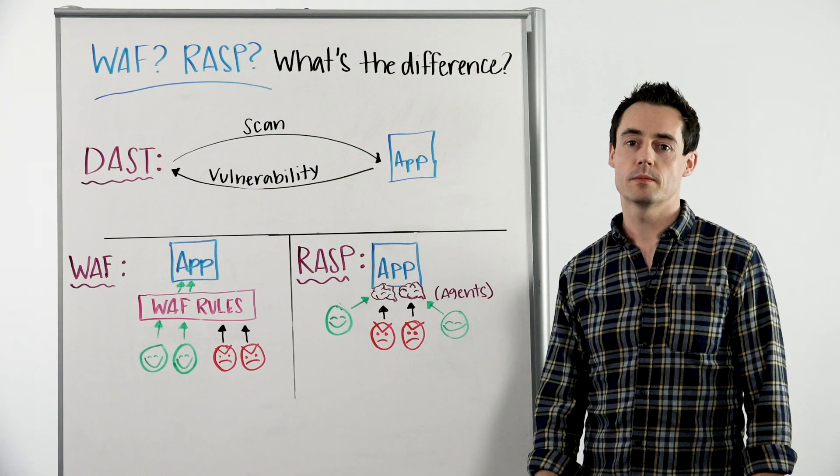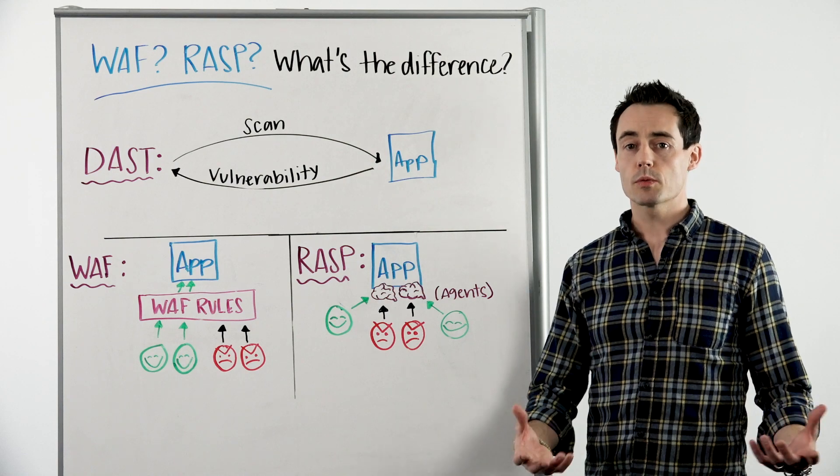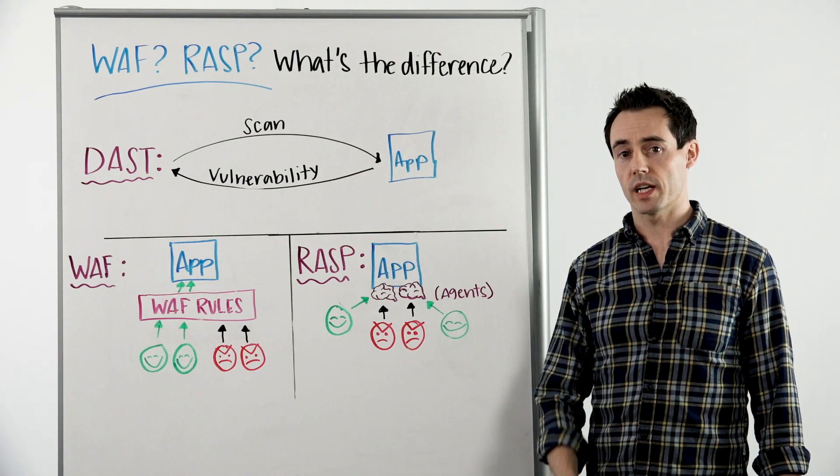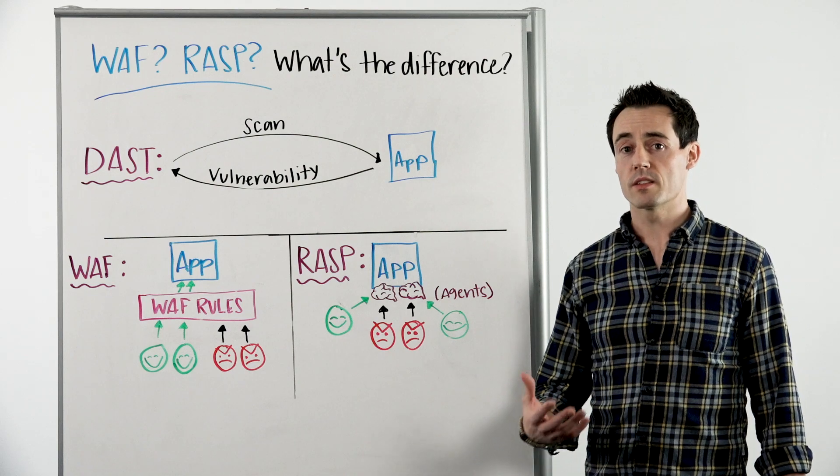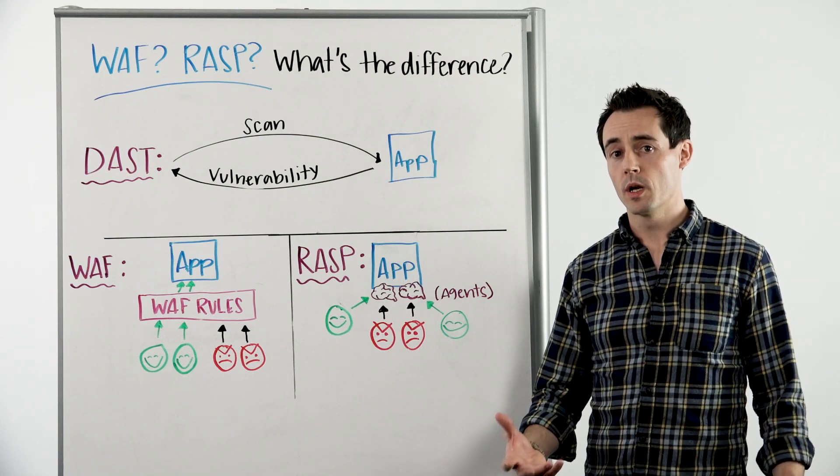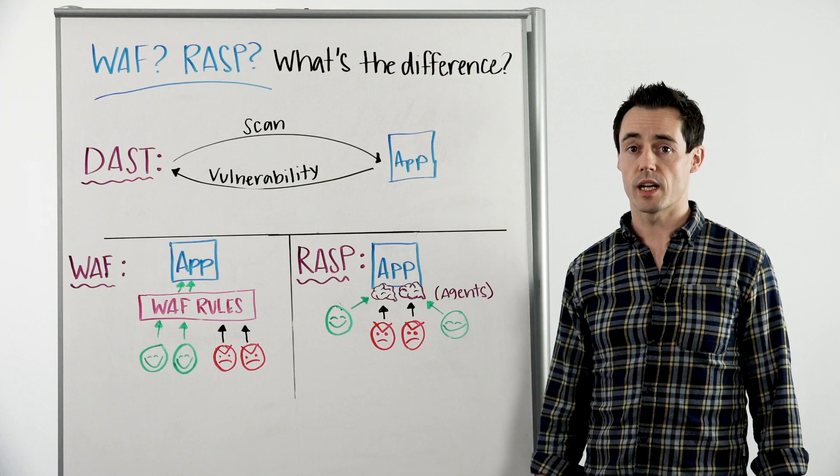So next we're going to talk about RASP, or runtime application self-protection. Runtime application self-protection works a lot like a WAF, blocking bad traffic, but does so without the need for static rules.